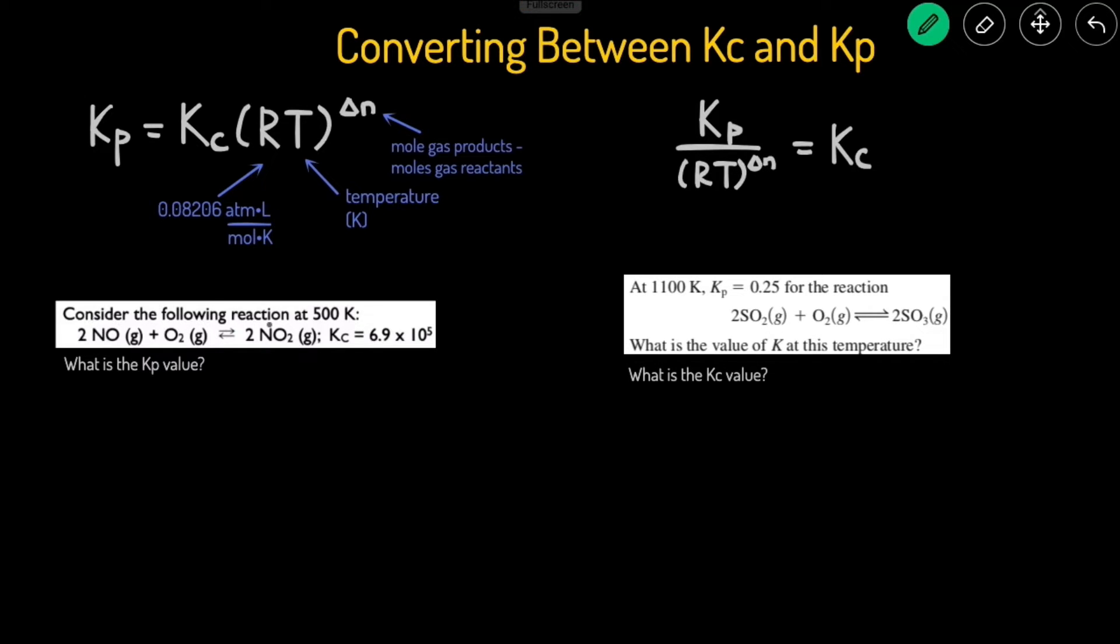We're given the following reaction is at 500 degrees Kelvin, and we have this balanced chemical reaction, and we have the Kc, and it asks for the Kp value.